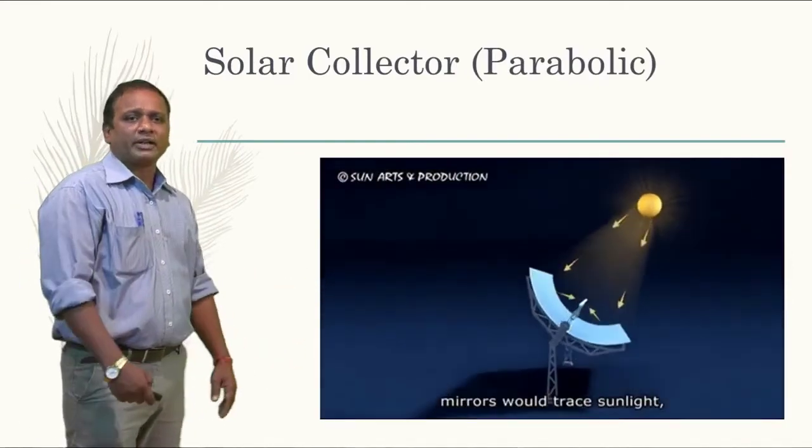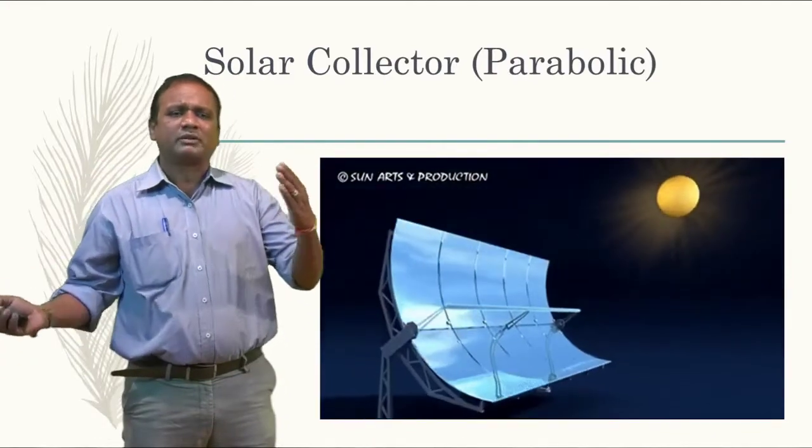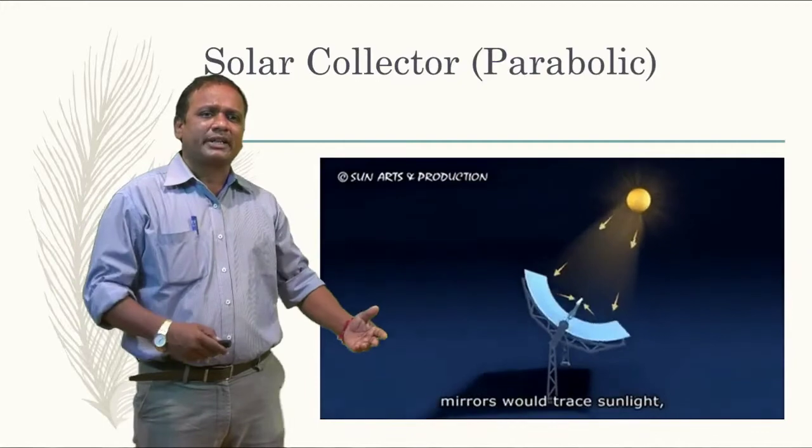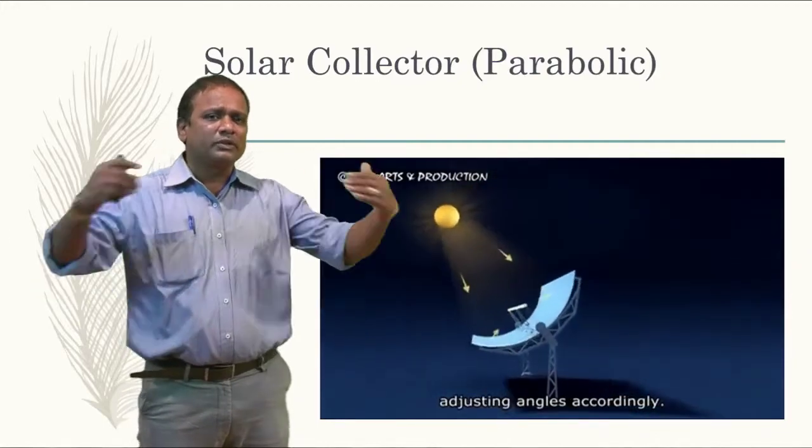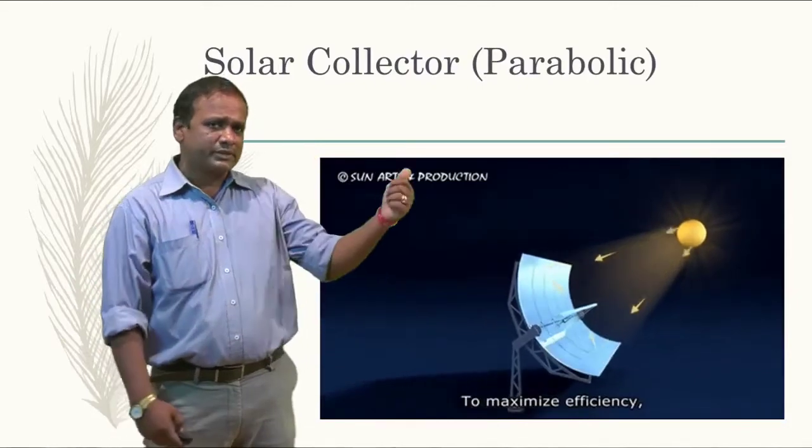Now we have solar parabolic collectors. As you could see over here, the whole parabolic collector moves or tracks the sun movement. As you can see here, maximum efficiency can be utilized from this. As the sun moves, the direction has been pointed back to this single concentrator. This is a sort of example we call a parabolic solar plate collector.